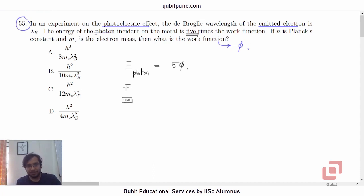So the energy of the emergent electron, what we call a photoelectron, what will that be? That will be 5φ minus φ or that will be 4φ. And this is also the kinetic energy of the electron. So, this is one relation: 4φ is equal to kinetic energy.